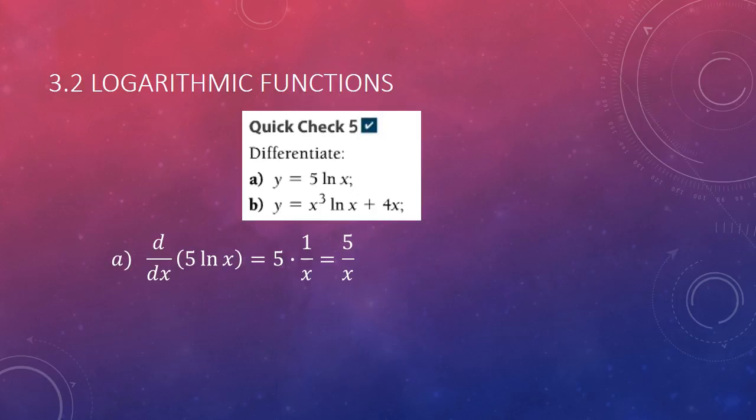And again, this is just going to be 5 times 1 over x, or 5 over x. And for b, use the product rule. So, we have x cubed times 1 over x plus 3x squared natural log of x plus 4, which gives us x squared plus 3x squared natural log of x plus 4.